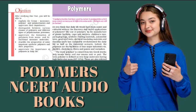Second, branch chain polymers. These polymers contain linear chains having some branches, e.g. low-density polythene. Third, cross-linked or network polymers. These are usually formed from bifunctional and trifunctional monomers and contain strong covalent bonds between various linear polymer chains, e.g. bakelite, melamine, etc.